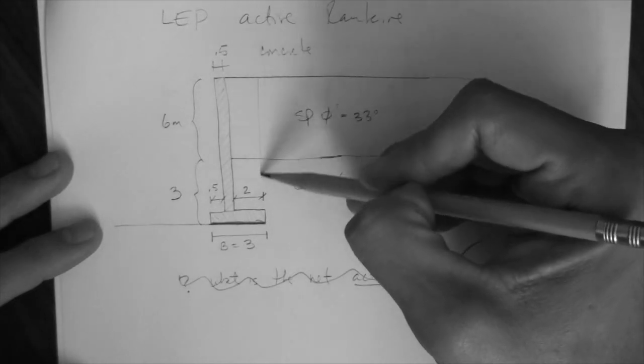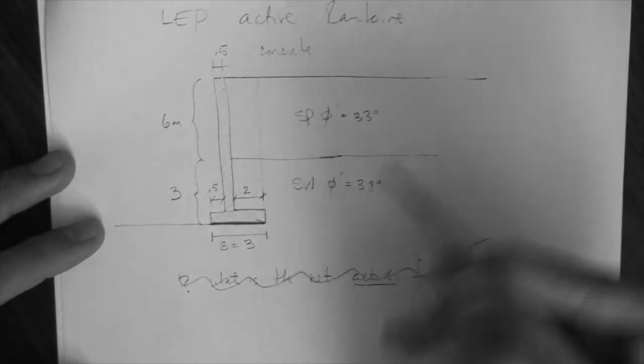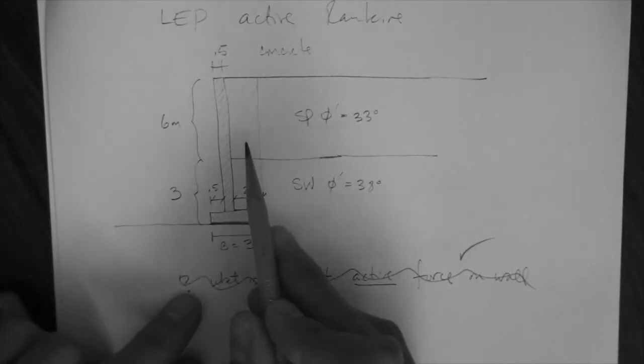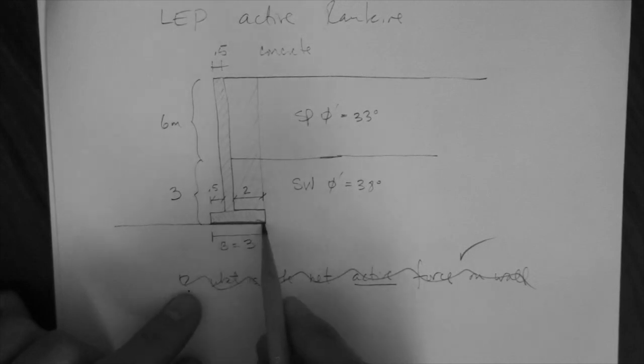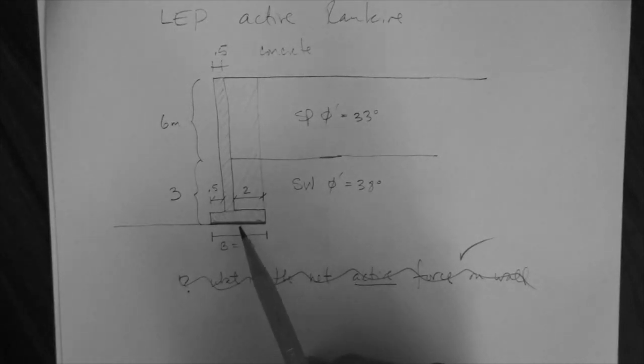And then there's also this soil back here that is acting on the toe side of the footing or the toe side of the wall. And that weight is normal to this surface, right? So that weight also contributes to the resistance that will arise, frictional resistance that will arise here.